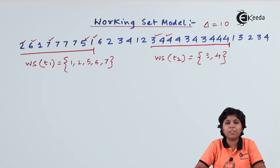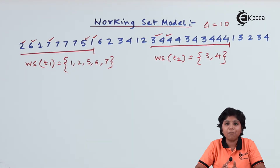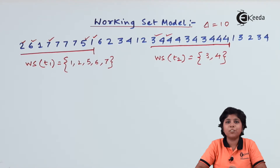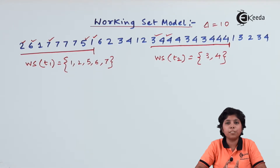At time t2, the working set contains only pages 3 and 4, and others are repetitions. The working set model generally prevents thrashing. If delta is too small, it cannot encompass the entire locality. If it is too large, it may overlap several localities. If the total number of frames demanded, d, is greater than or equal to m (total frames available), then thrashing will occur.